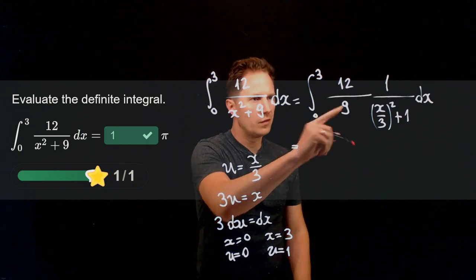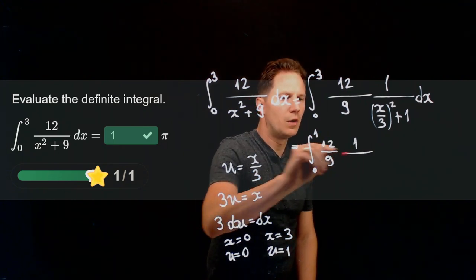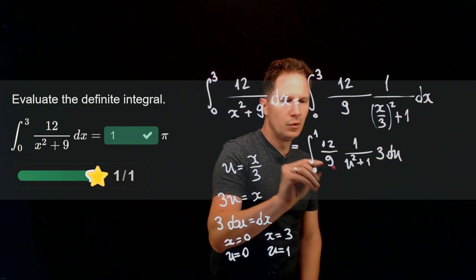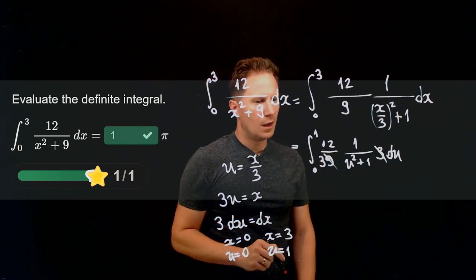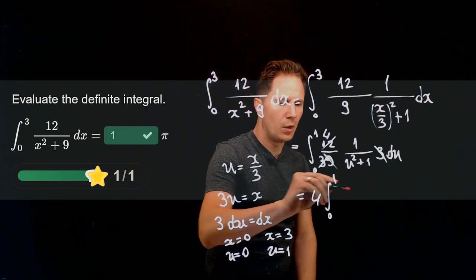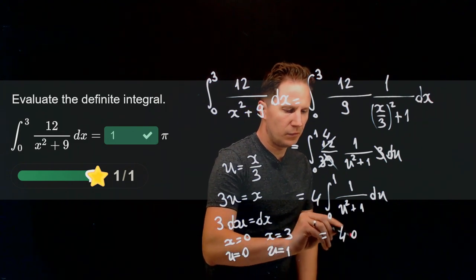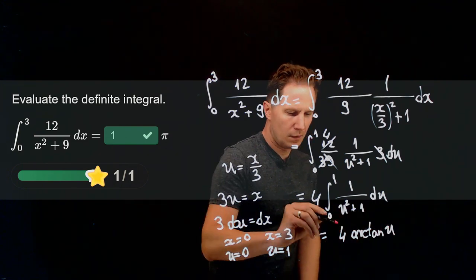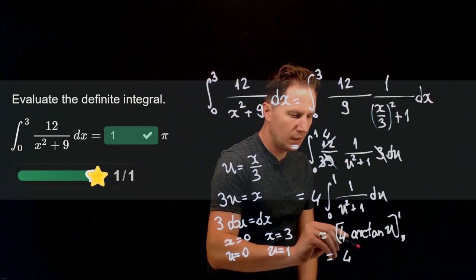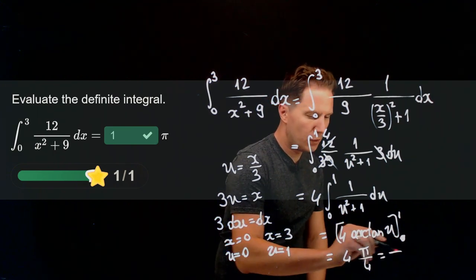And so this integral turns into an integral from 0 to 1 in terms of u, 12 over 9, 1 over u squared plus 1, and then the dx is simply 3du. We can simplify it slightly so this is 12 over 3 that's just a factor of 4 so we have 4 times the integral from 0 to 1 of 1 over u squared plus 1 du and this integral is 4 times the arctan of u as u goes from 0 to 1. So the inverse tangent at 1 is pi over 4 whereas the inverse tangent at 0 is simply 0 therefore we have 4 times pi over 4 that is pi.